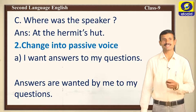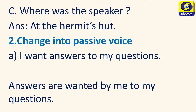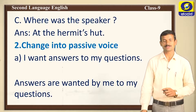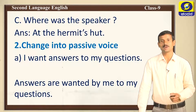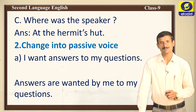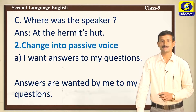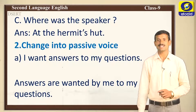Now change this sentence into passive voice. We discussed simple present and simple past tense in the last class. The sentence is: 'I want answers to my questions.' Here, subject is 'I,' verb is 'want,' and 'answers' is the object. Object comes to the subject place. Answers is a plural noun, so we use: 'Answers are wanted by me.' When the pronoun 'I' moves to the object place, it changes to 'me.'